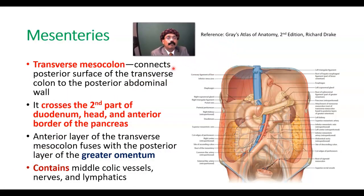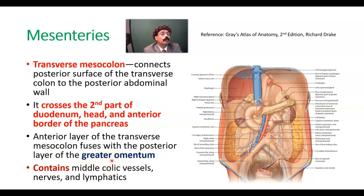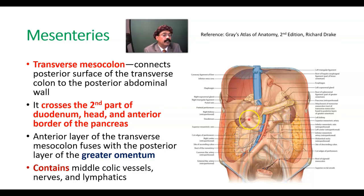The transverse mesocolon connects the posterior surface of the transverse colon to the posterior abdominal wall. It crosses the second part of the duodenum, and the head and anterior border of the pancreas. The anterior layer of the transverse mesocolon fuses with the posterior layer of the greater omentum forming the gastrocolic ligament. It contains the middle colic vessels, nerves, and lymphatics.